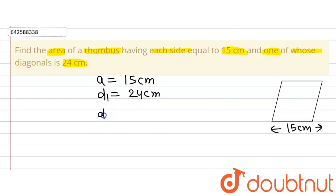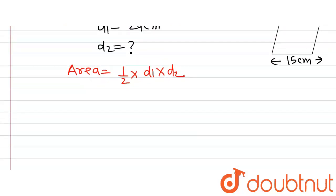The other diagonal is not given, so D2 is what we are going to find out because ultimately we are supposed to find the area of this rhombus, and the area of the rhombus is half the product of the two diagonals, that is D1 multiplied by D2.